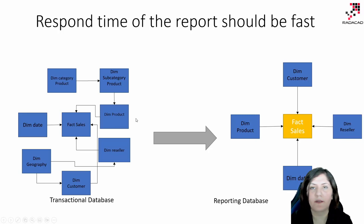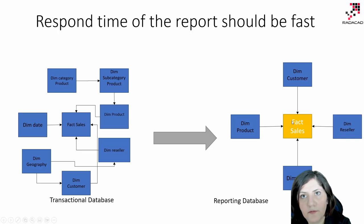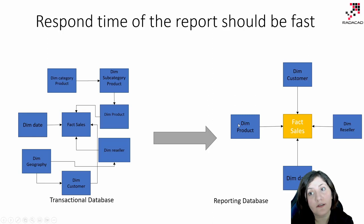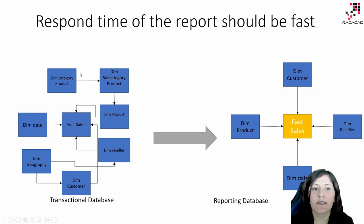Instead of having a transactional database with lots of separate tables — for example, three tables for product: dim product, sub product category, and product category — we consolidate everything into one product dimension table. We put everything as close as possible to what we need for creating reports. These are the main facts I'm going to analyze, such as sales amount or quantity, analyzed by the dim product. Before we go further, there are two types of tables in a data warehouse for creating reports.